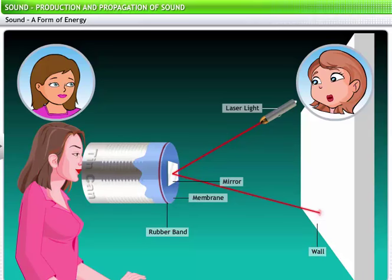Using a laser torch, we focus a light ray on the mirror such that it reflects on a wall as a spot. The final step is to shout in the open end of the cylinder. This is an experiment. Did you see how the reflected light spot moved on the wall? Oh, yes. If you shout again, it will move again.